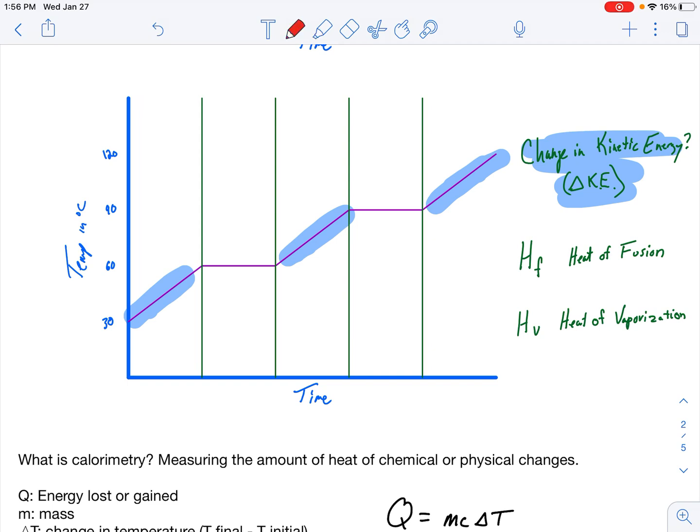For heat of fusion and heat of vaporization, we're going to be using these in specific parts of our heating curve. Heat of fusion is going to be at your first horizontal. We're going to be talking about things fusing together. And heat of vaporization is at your second horizontal, HV.